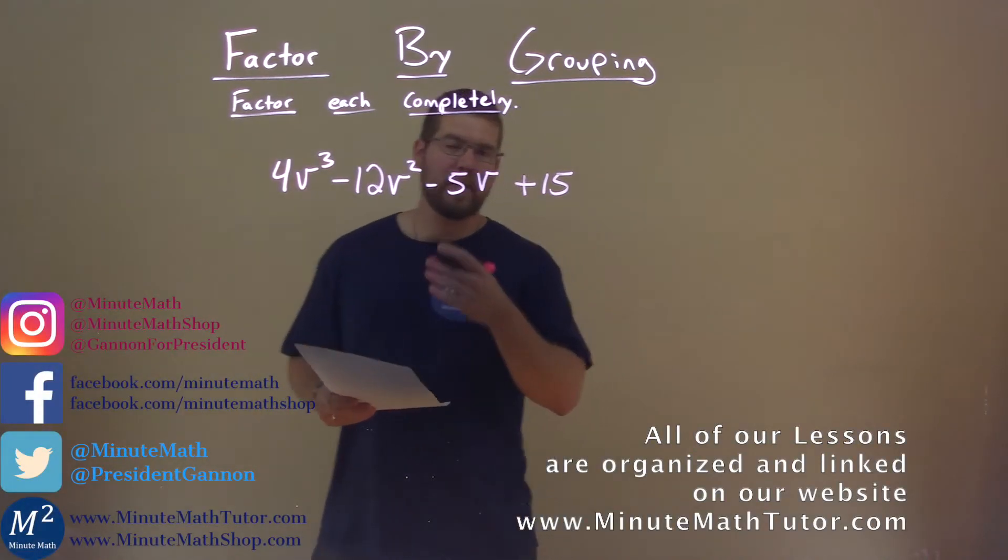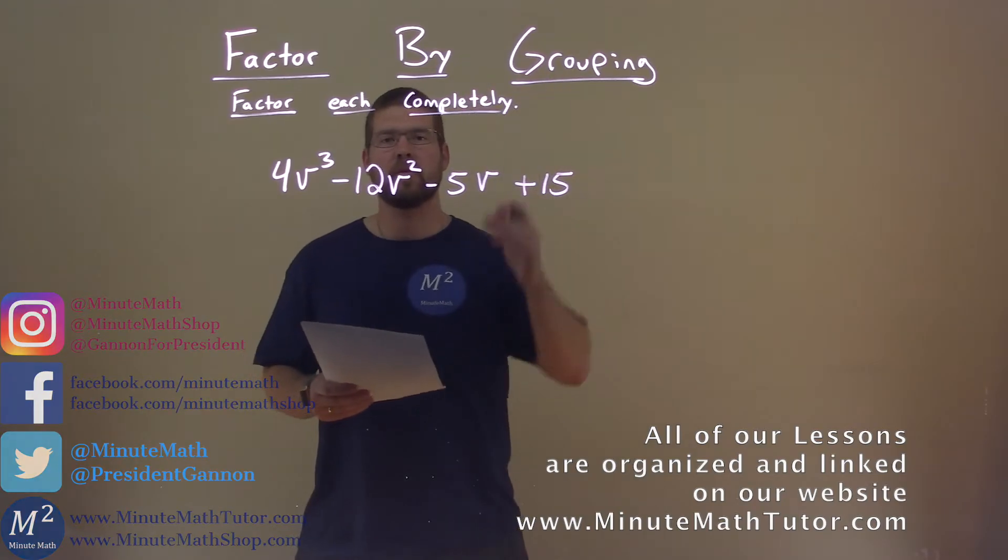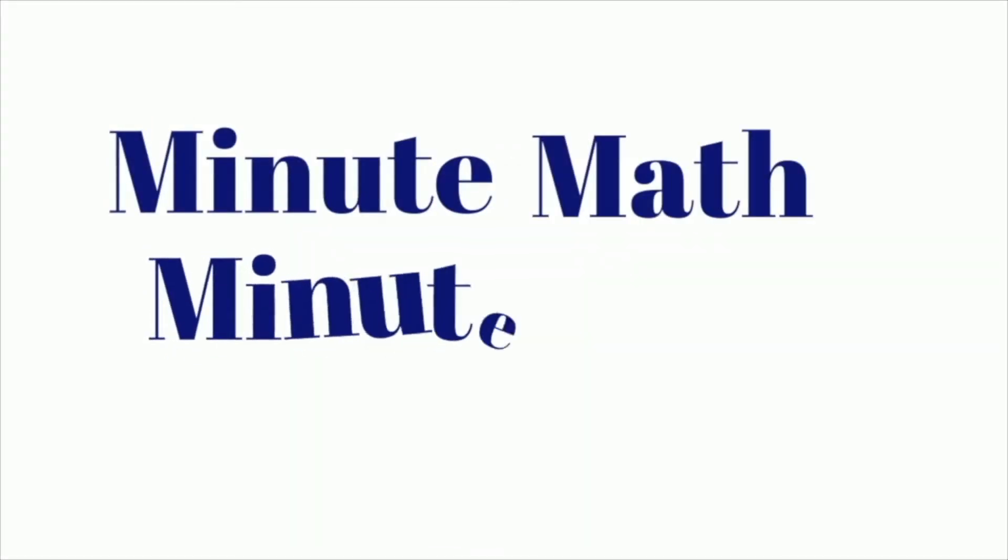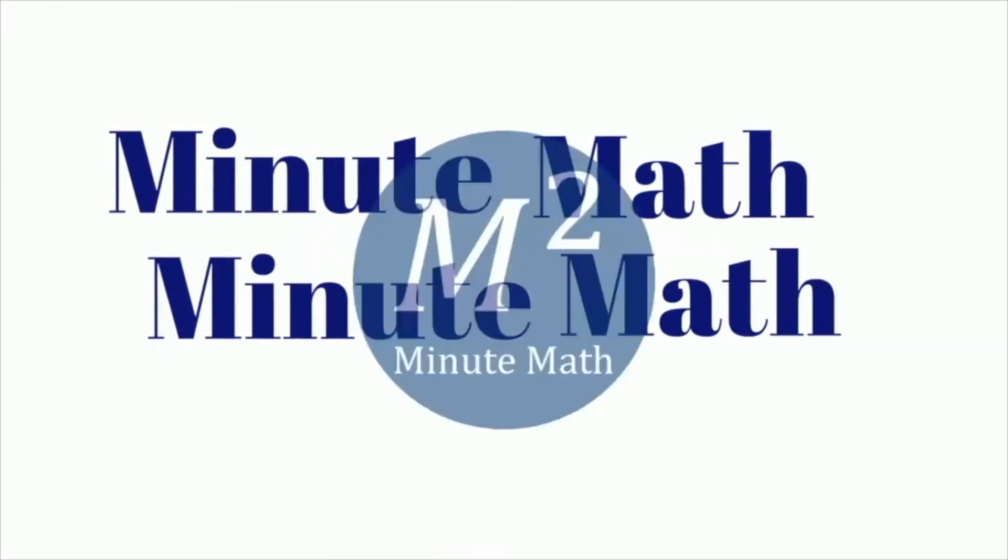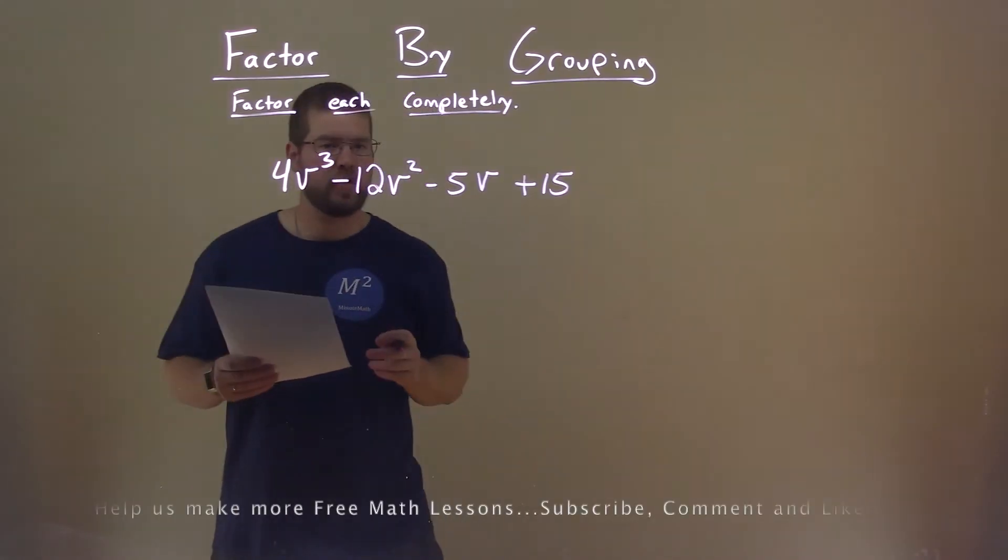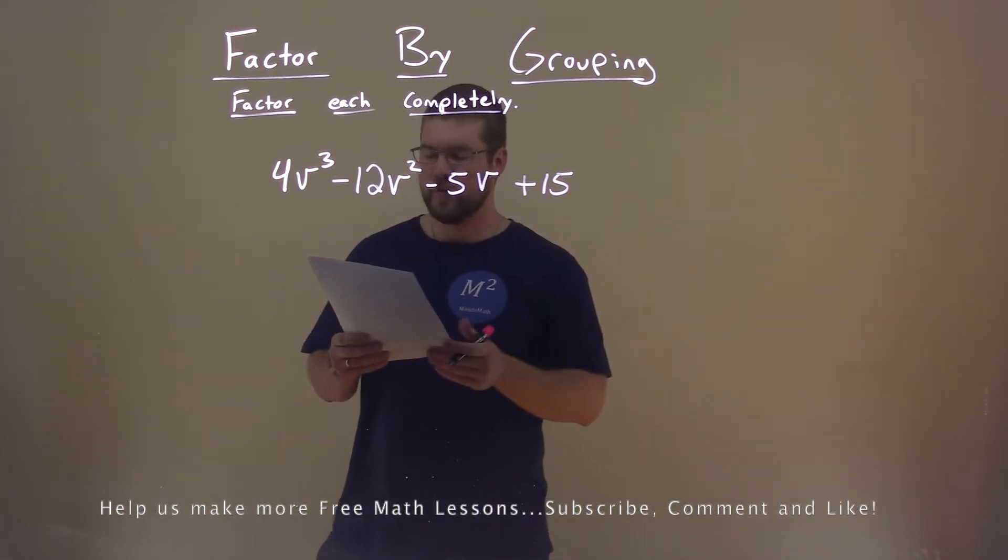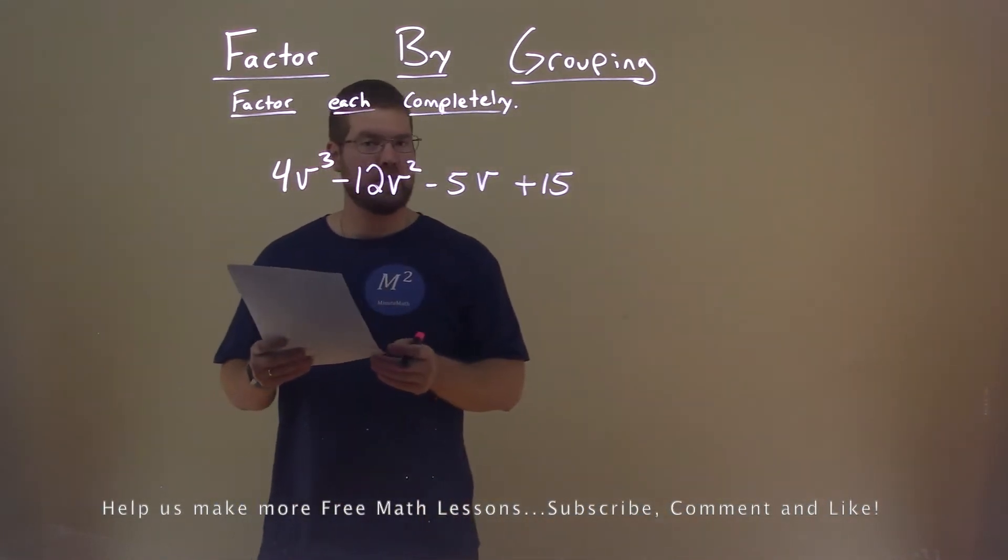Hi, I'm Sean Gannon and this is Minute Math. Today we're learning about factor by grouping. We're given this problem right here: 4v³ - 12v² - 5v + 15, and we need to factor this completely.